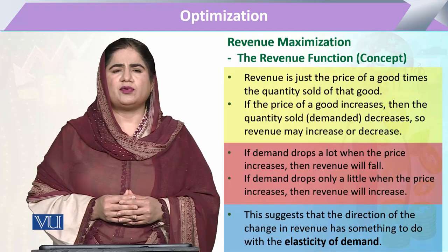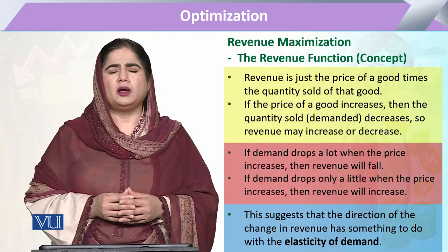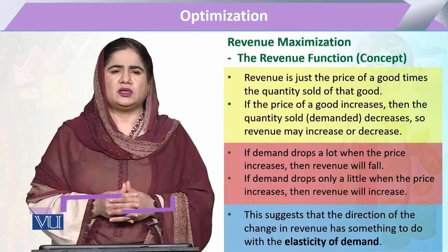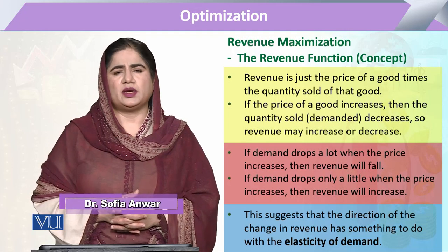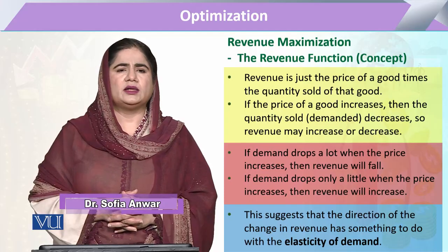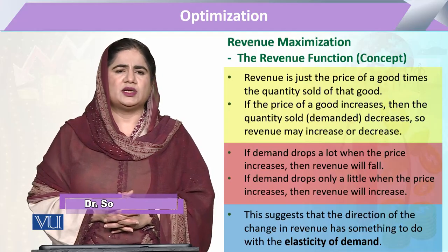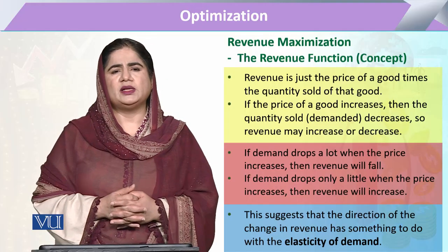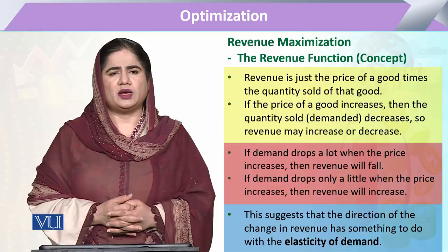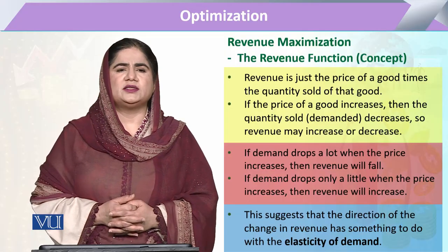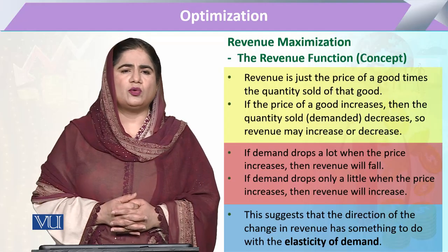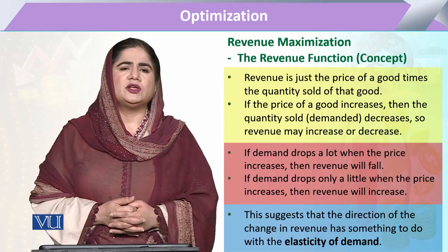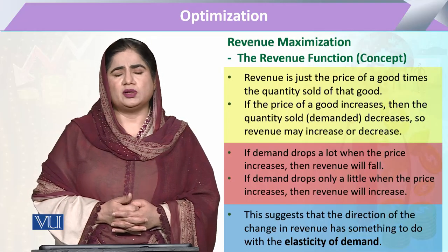That change in the price of output can be positive or negative. Taking the example where the market price increases: whenever there is an increase in the output price, we have already noted that the supply function has a positive response to price change. So whenever output price increases, a producer will tend to increase or offer more output in the market, and will not leave this opportunity to grab more profit or revenue.